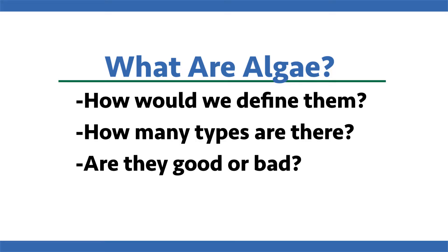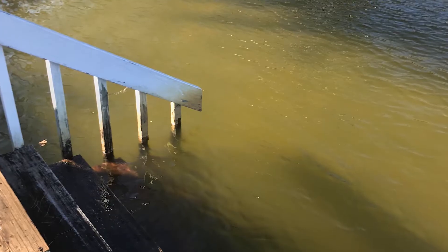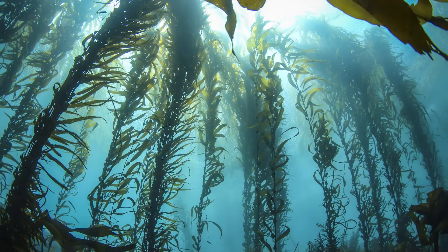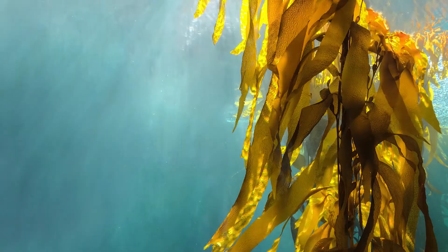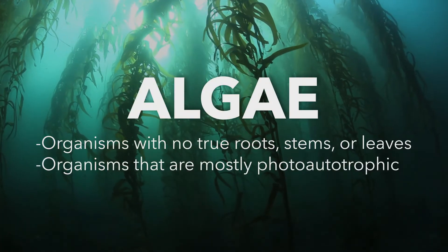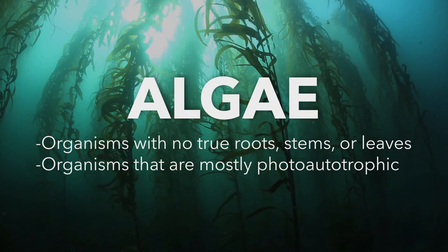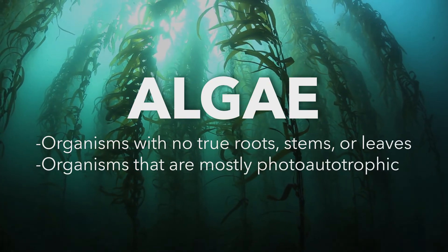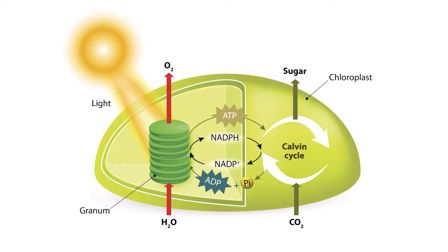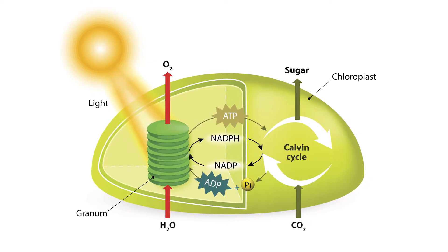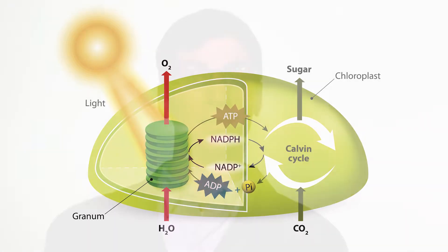In general, algae are a very diverse group of organisms. They span from single-celled planktonic small organisms you have to use a microscope to see, to large ocean kelps that can be 300 feet long. The definition of algae is quite a broad term — in general, it means organisms with no true roots, stems, or leaves, and organisms that are mostly photo-autotrophic.